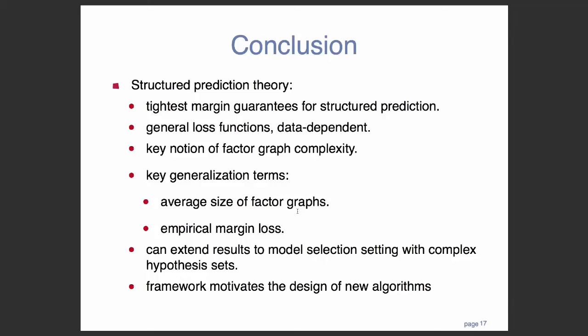So in conclusion, what we've done is we've come up with new theory, new general theory for structure prediction. We have the tightest margin guarantees for structure prediction that are consistent with all previous results. Our results, our theorems apply for general loss functions. They're data dependent. And we did all this by introducing the key notion of factor graph complexity. And our generalization bounds tell us that what matters is the empirical margin loss, having a small empirical margin loss and having a small average factor graph size. And we can extend these results to the model selection setting with complex hypotheses. And we can also use this framework to design new algorithms, which we do, but since we're in the theory section of the talk, I'm not going to go over that. Yeah, that's it.